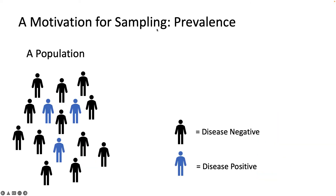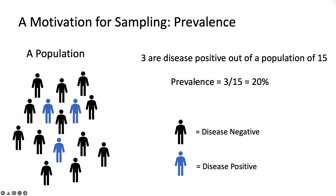If our goal is to find the prevalence of disease in a population, here's an example where we have a population of 15 people and three are disease positive. That gives us a prevalence of three over 15, so 20%. There can be more extreme examples like millions of people, where it's not feasible to talk to everyone and figure out whether they have the disease.